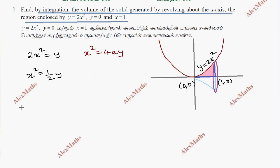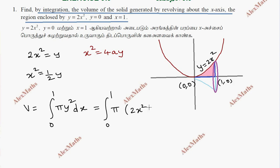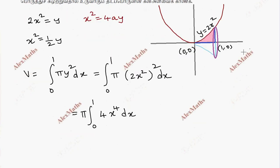The volume formula is equal to the integral from 0 to 1 of π y² dx. Since y² is equal to 2x², this becomes π times the integral from 0 to 1 of 2x² dx, which simplifies to the integral from 0 to 1 of 4x⁴ dx.